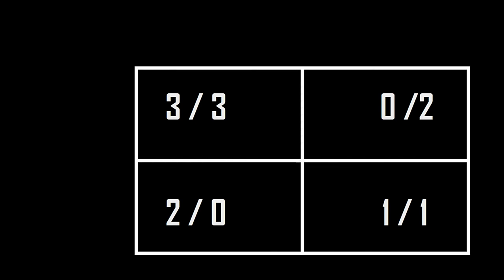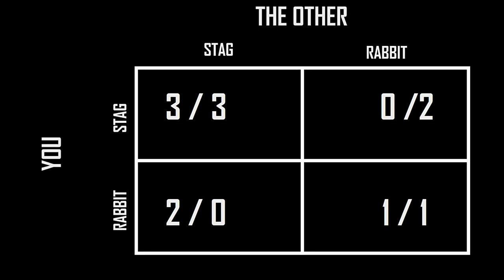If both of you go for the rabbits, both of you will get one day's worth of food. Looking at this matrix, the stag-stag outcome is clearly the best one where both players get the best outcome. At that point, neither party gains any benefit by changing their strategy and going for the rabbits. In the stag-rabbit and rabbit-stag situations, the party going for the stag can change their strategy to rabbits and get a better outcome — one day is better than zero. So stag-stag is a Nash Equilibrium.